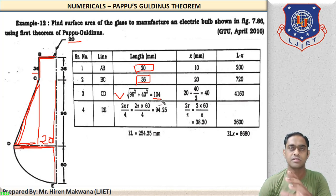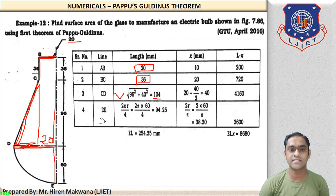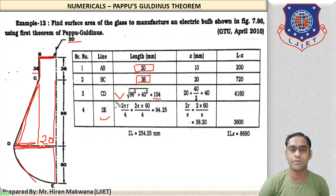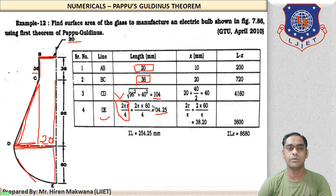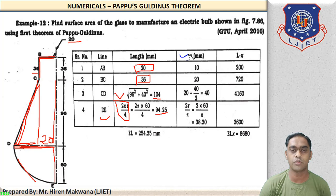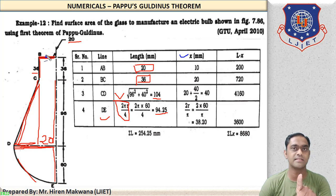Pythagoras theorem is applicable for finding the length of CD. Now the last length is DE — which is a quarter circle arc. For a quarter circle arc, length = 2πR/4. Substituting R = 60: DE = 94.25 mm. So all four element lengths are now known.